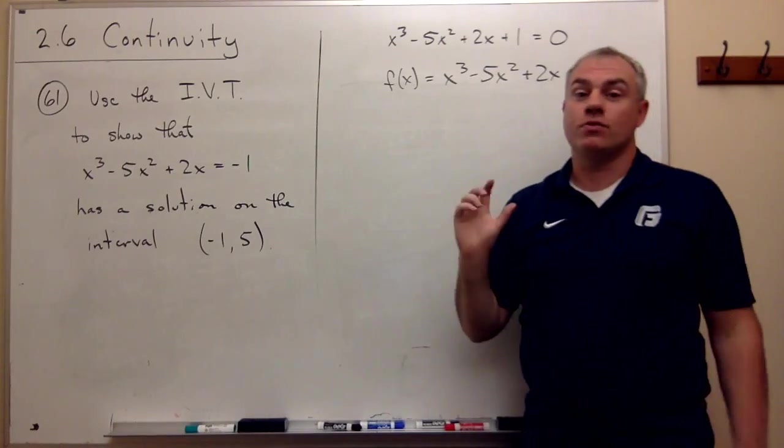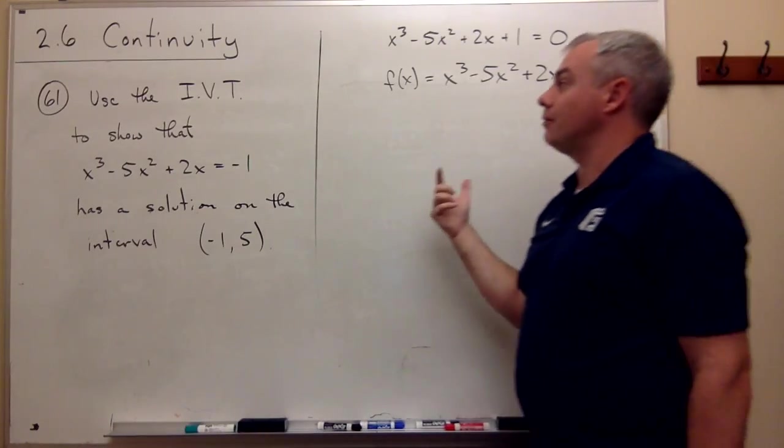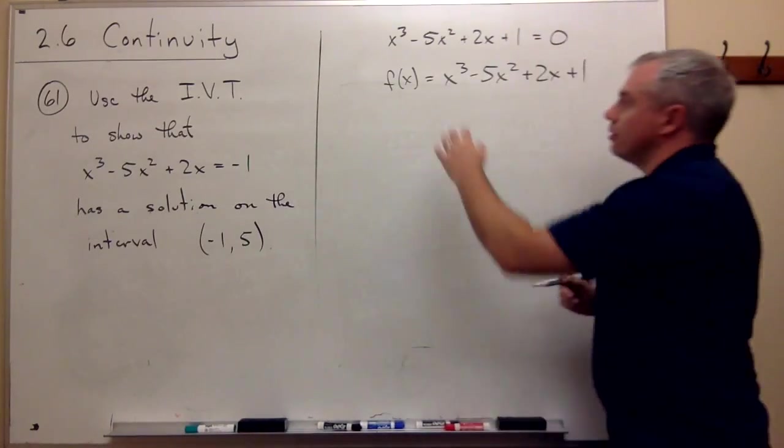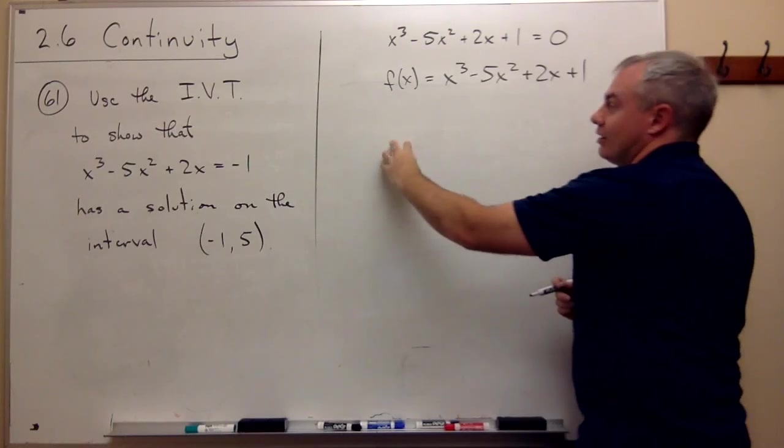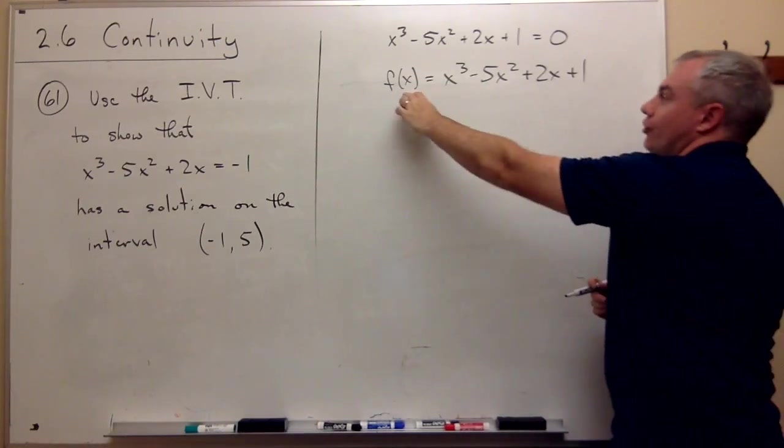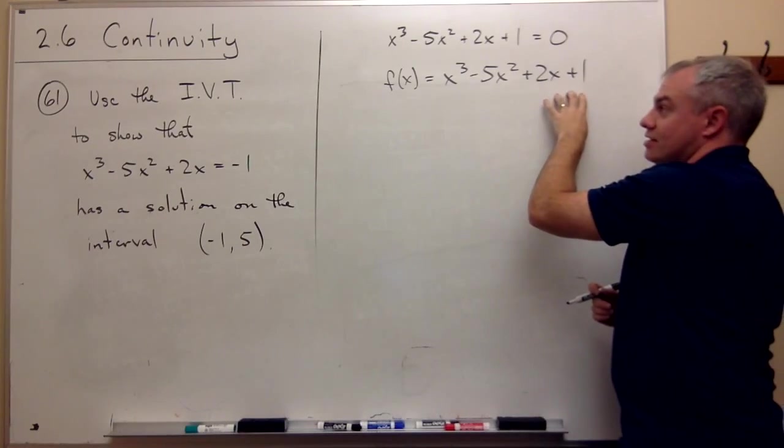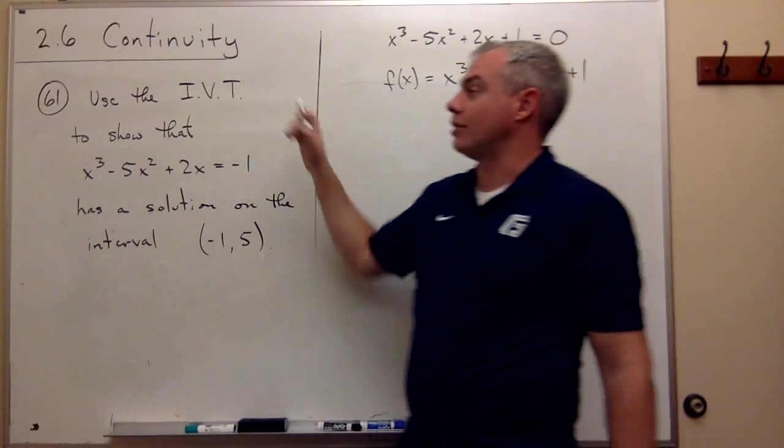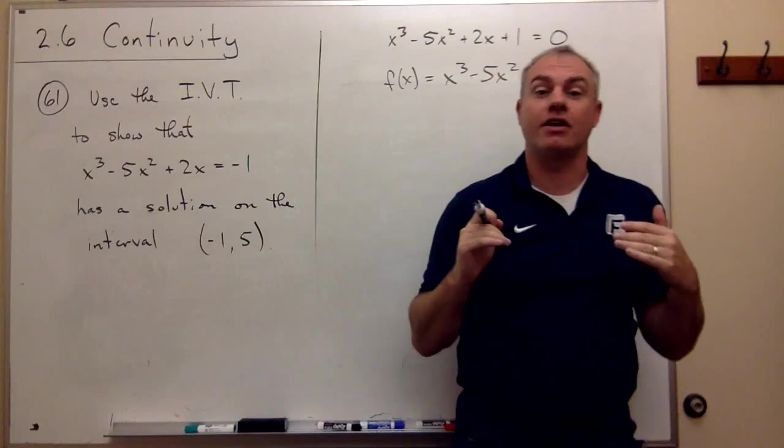Now this is where the intermediate value theorem can help me. It says that if I plug in one value and it's negative, and another value and it's positive, and I know that this function is continuous, then the intermediate value theorem guarantees me a 0.